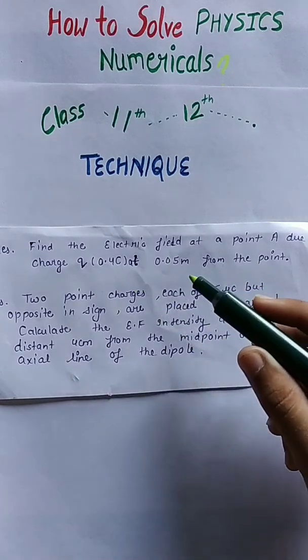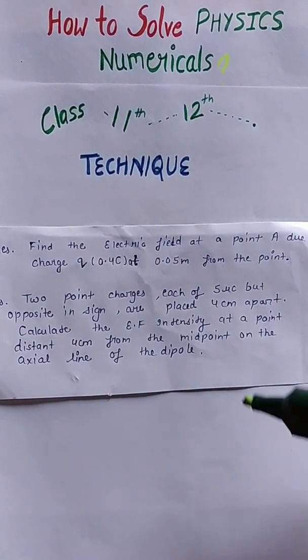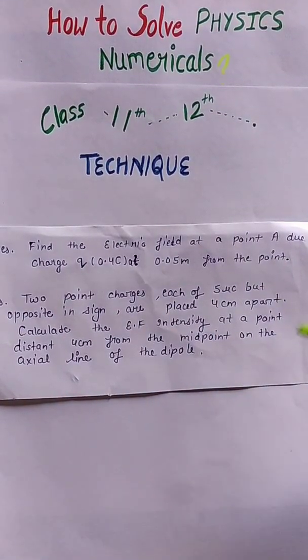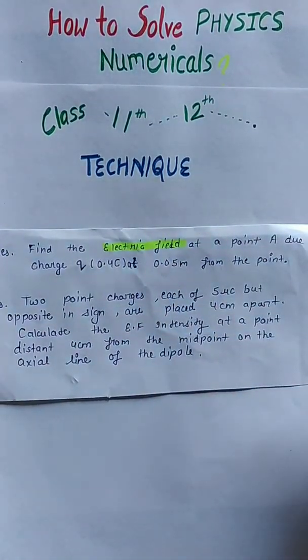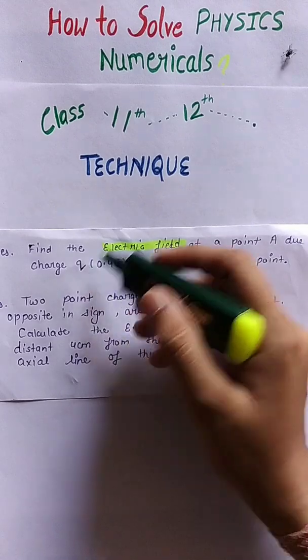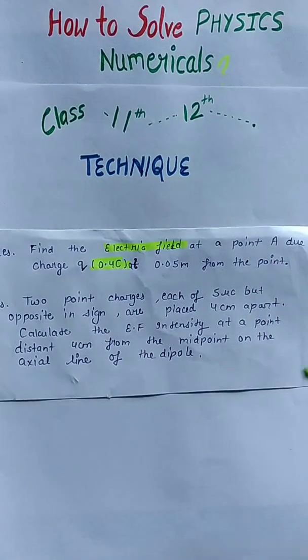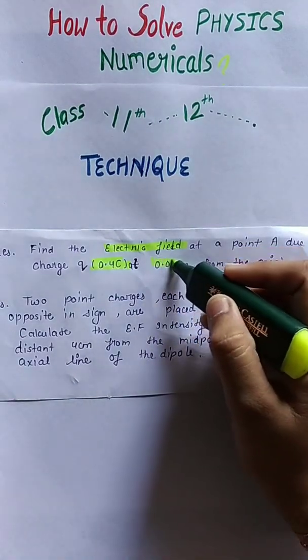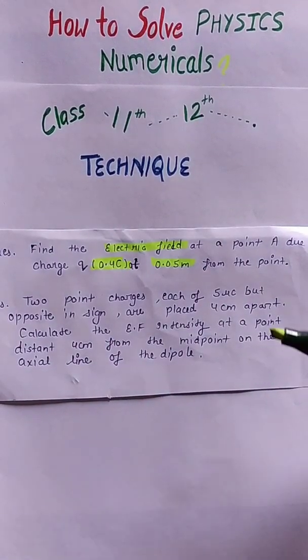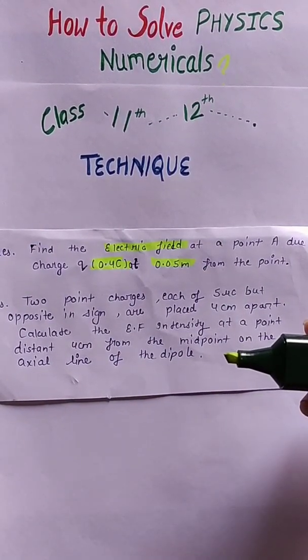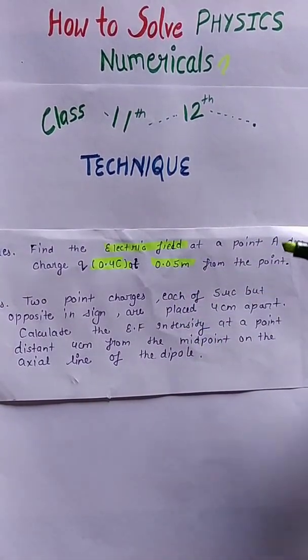What we have to find out in this question is the value of electric field at a point. The charge q given is 0.4 coulomb, which is at a distance of 0.05 meter from that point. First we will write what is given, then what we have to find out, and use the formula.